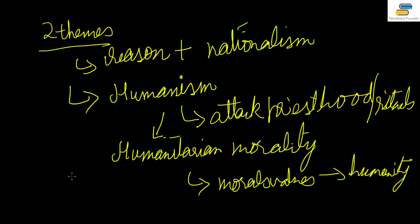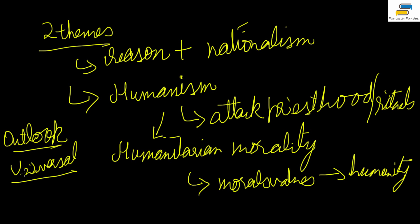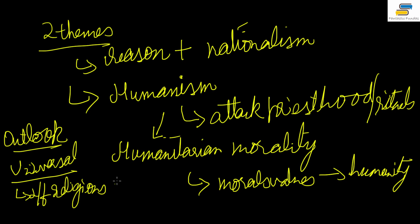The general outlook of all the people associated with the social-religious reform movement was universalistic — a universal outlook meaning taking care of all. For example, Raja Ram Mohan Roy said that different religions are expressions of a universal God. Sir Syed Ahmed Khan said that prophets had the same divine message. This was the basic thought process underlying the social-religious reform movement.